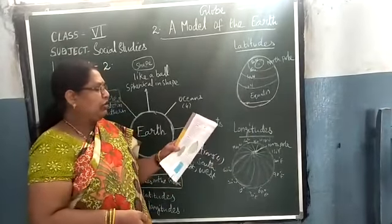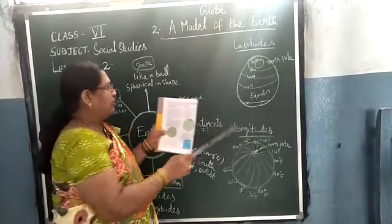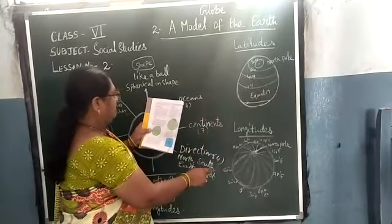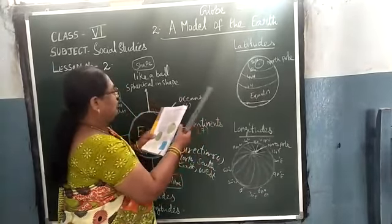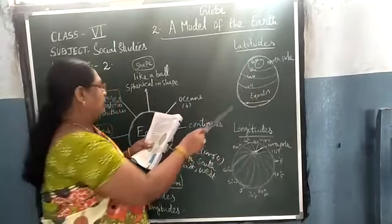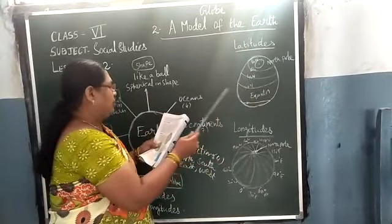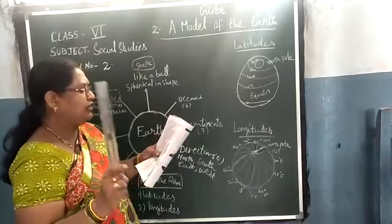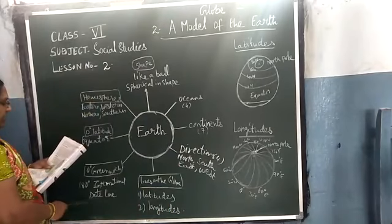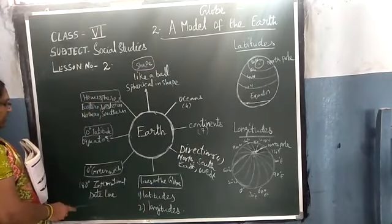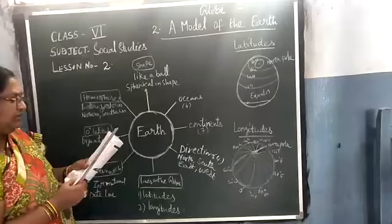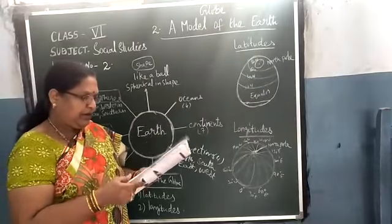Then how to draw lines on the globe. These are the longitudes. Longitude lines run from one pole to the other pole. There are two main longitudes: the Greenwich meridian and the International Date Line. These two longitudes are very important.